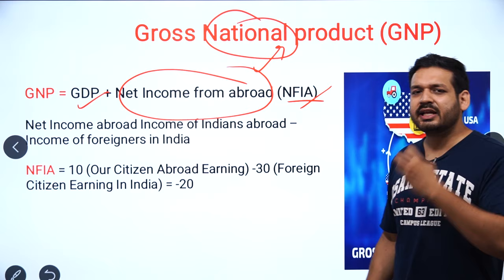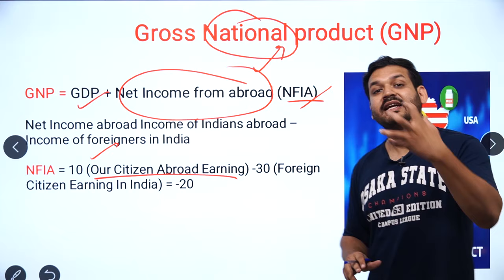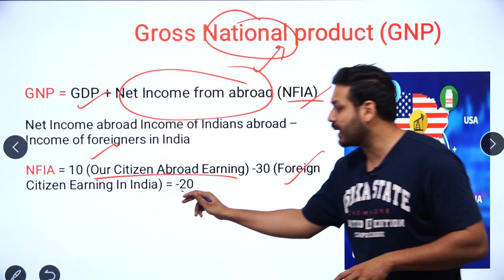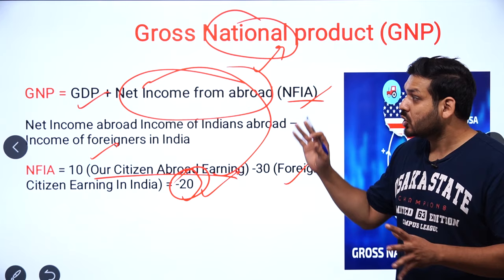For example, suppose Indians abroad in foreign countries are earning 10 rupees — I'm just making a hypothetical example. And those who are living in India, foreigners, earn 30 rupees. So net factor income from abroad is 10 minus 30, which is minus 20. So if we add GNP = GDP minus 20, the NFI is negative in this case.